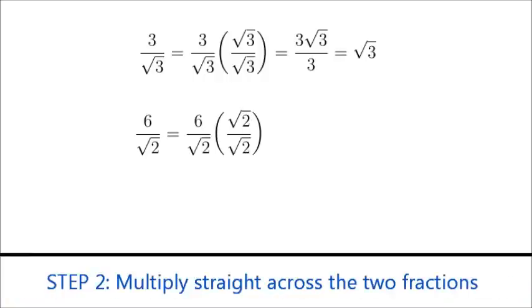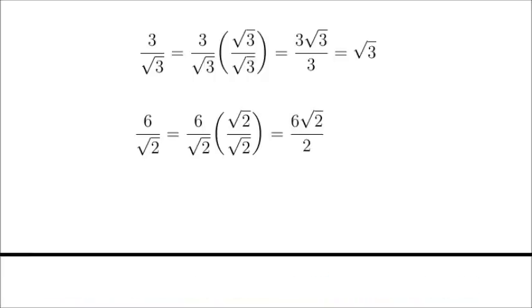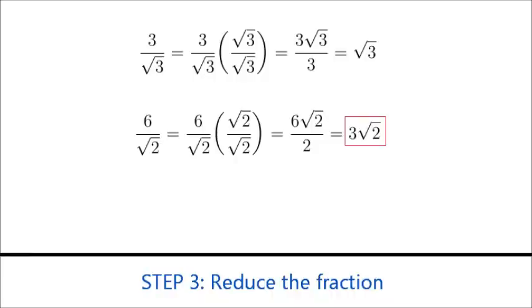On the top, that leaves us with 6 times the square root of 2, and on the bottom, that leaves us with 2. Now, 6 over 2 is 3, and so we're left with 3 times the square root of 2.